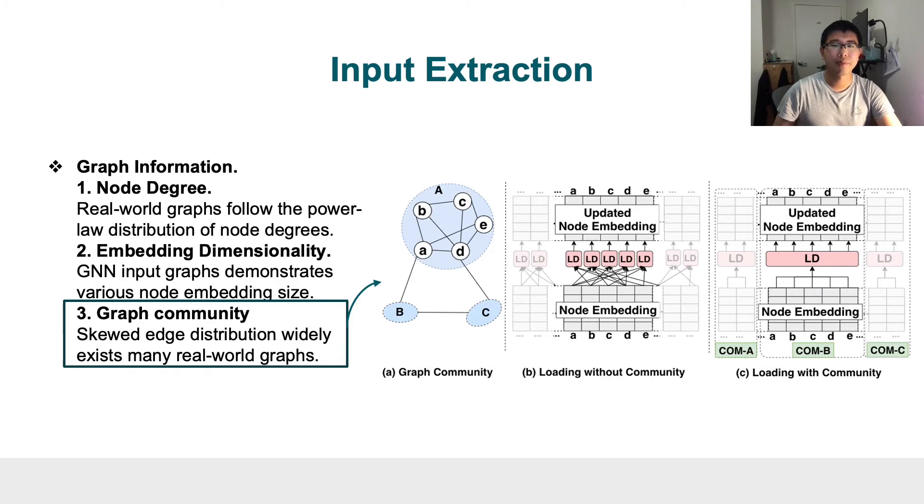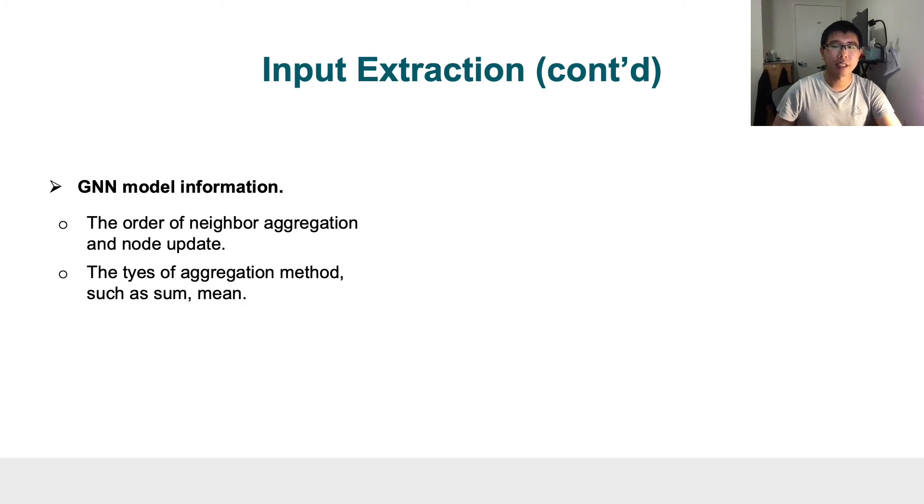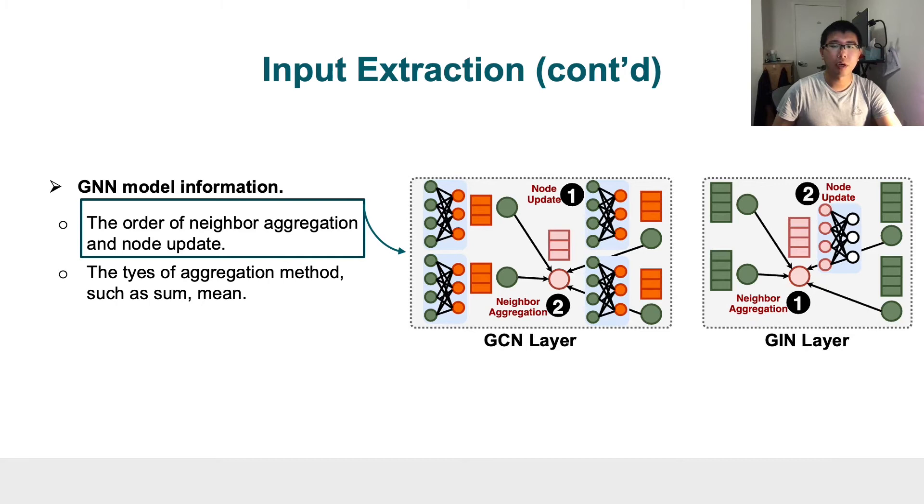The second one is GNN model information, such as the order of neighbor aggregation and the node update. For example, in the right-hand side figure, we can easily see the difference of operation order between the GCN layer and the GIN layer. The second type is the type of aggregation method, such as sum aggregation or mean aggregation.